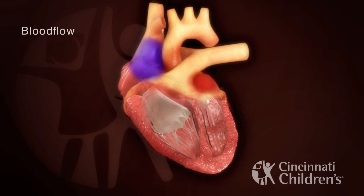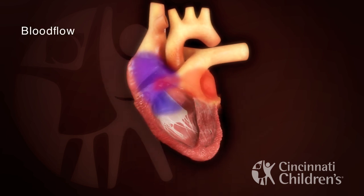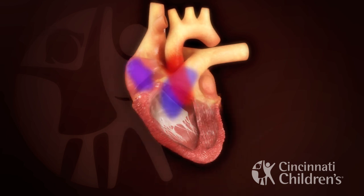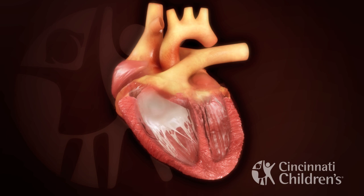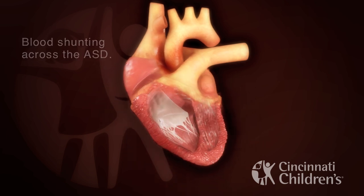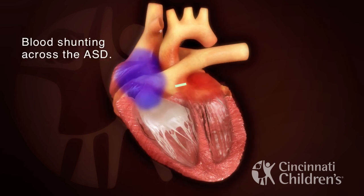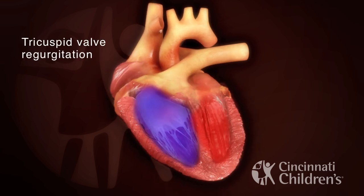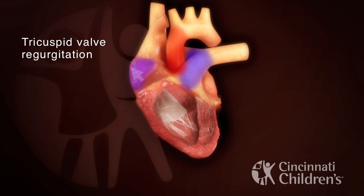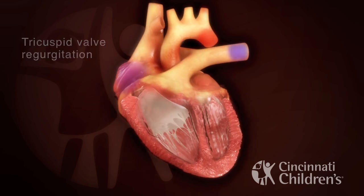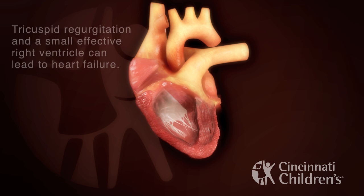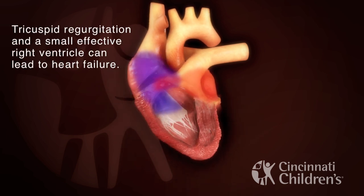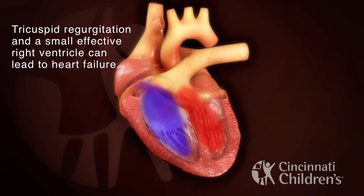This is blood flow in Ebstein Anomaly. Here is blood shunting across the ASD. This is tricuspid valve regurgitation. Tricuspid regurgitation and a small right ventricle can lead to heart failure.